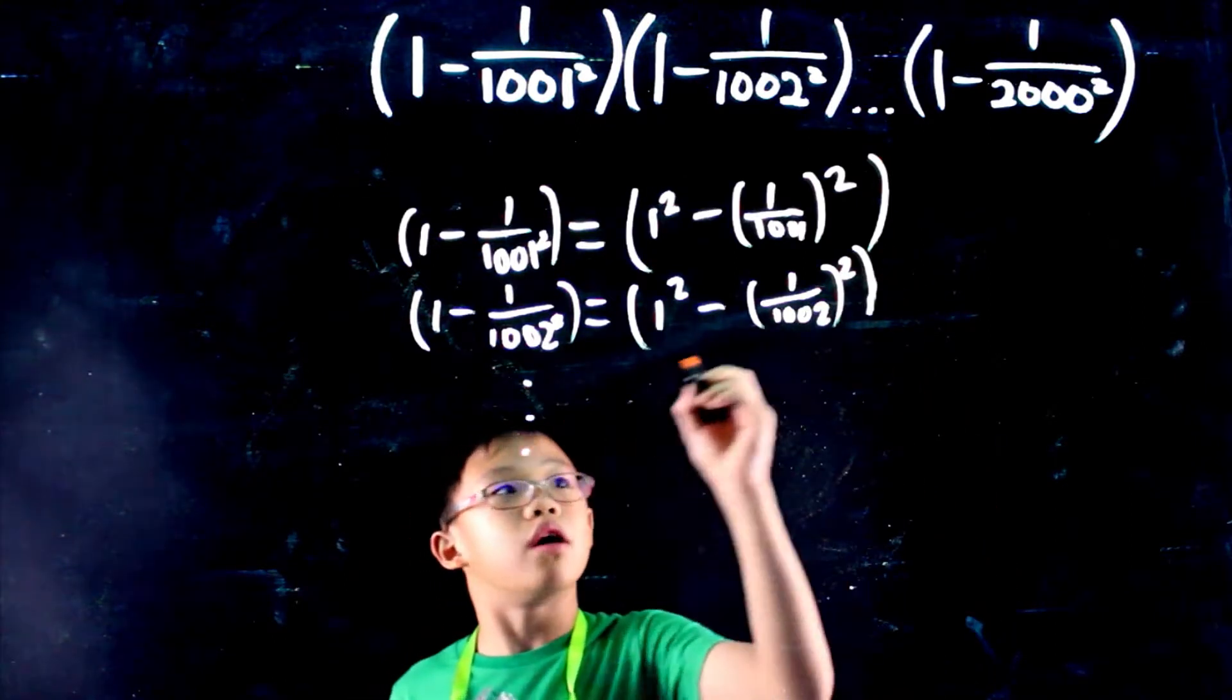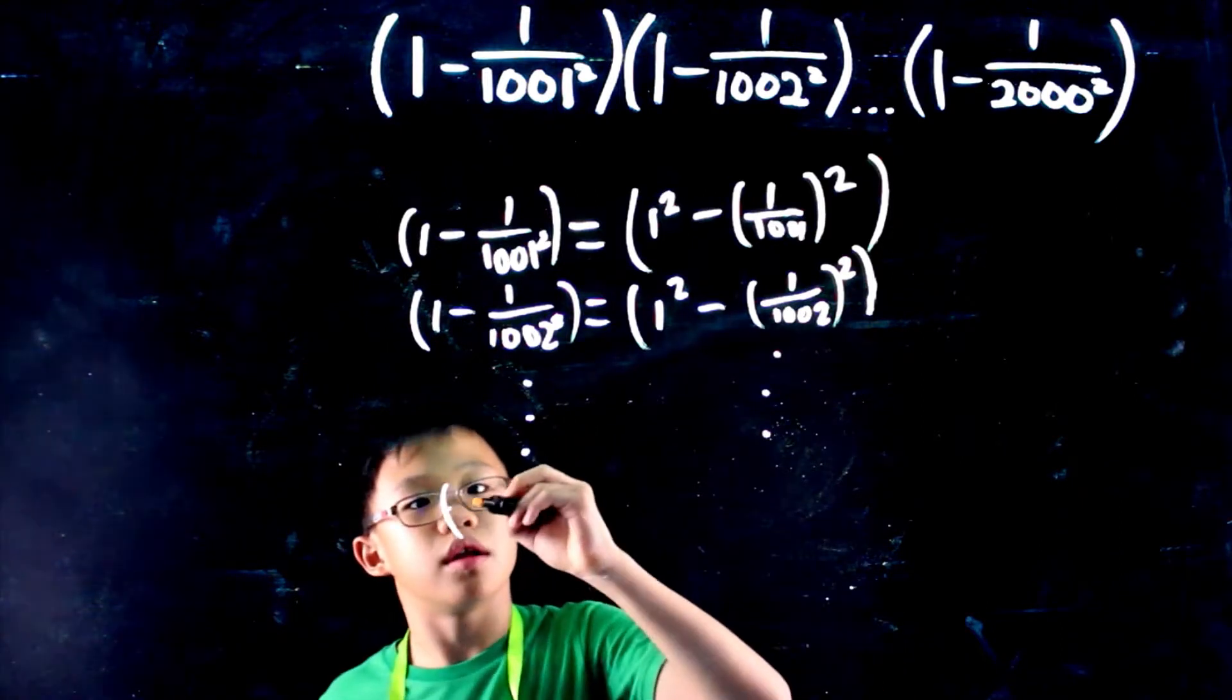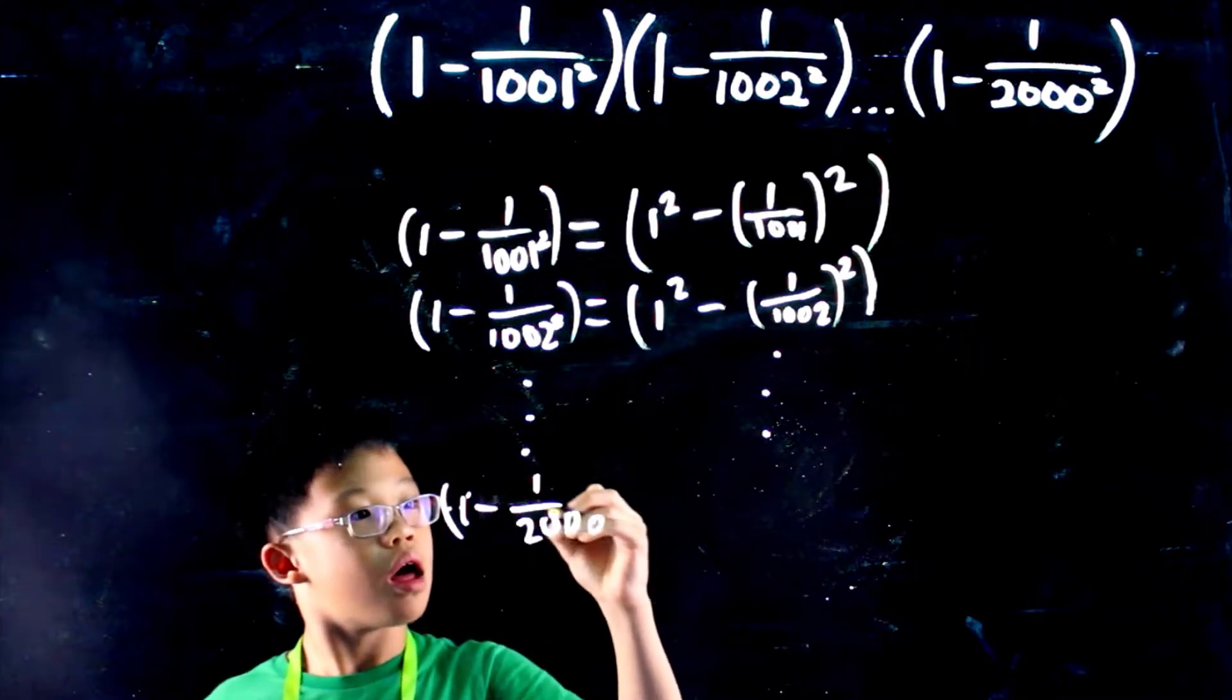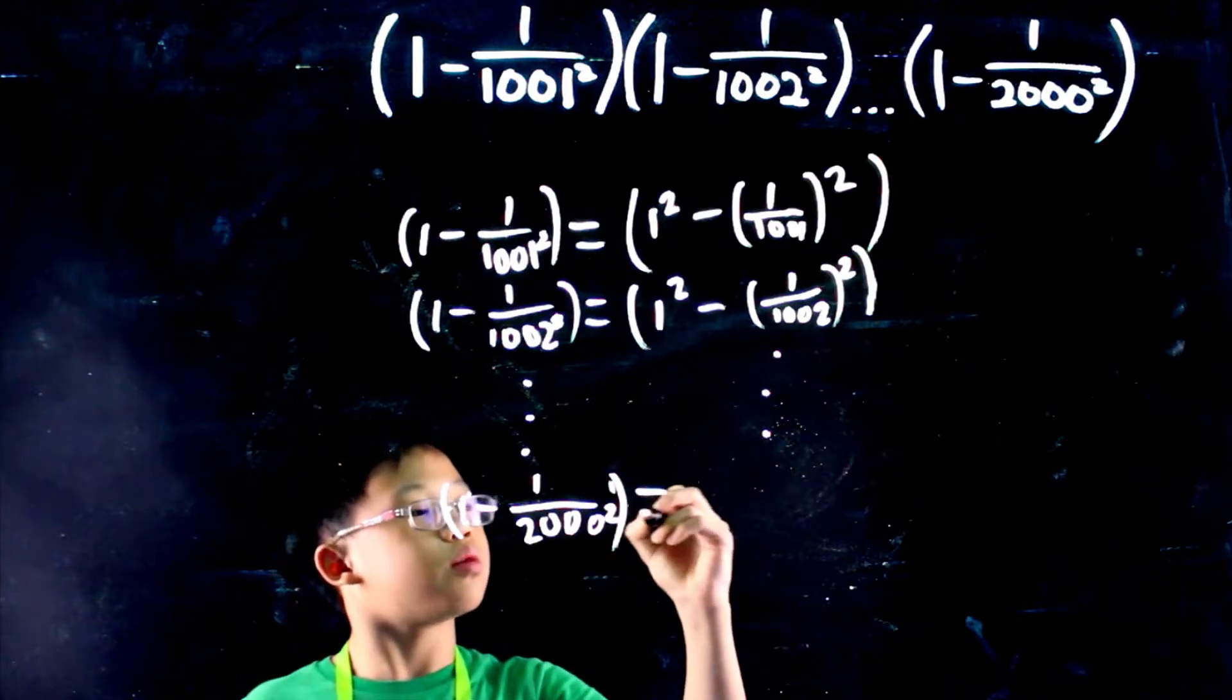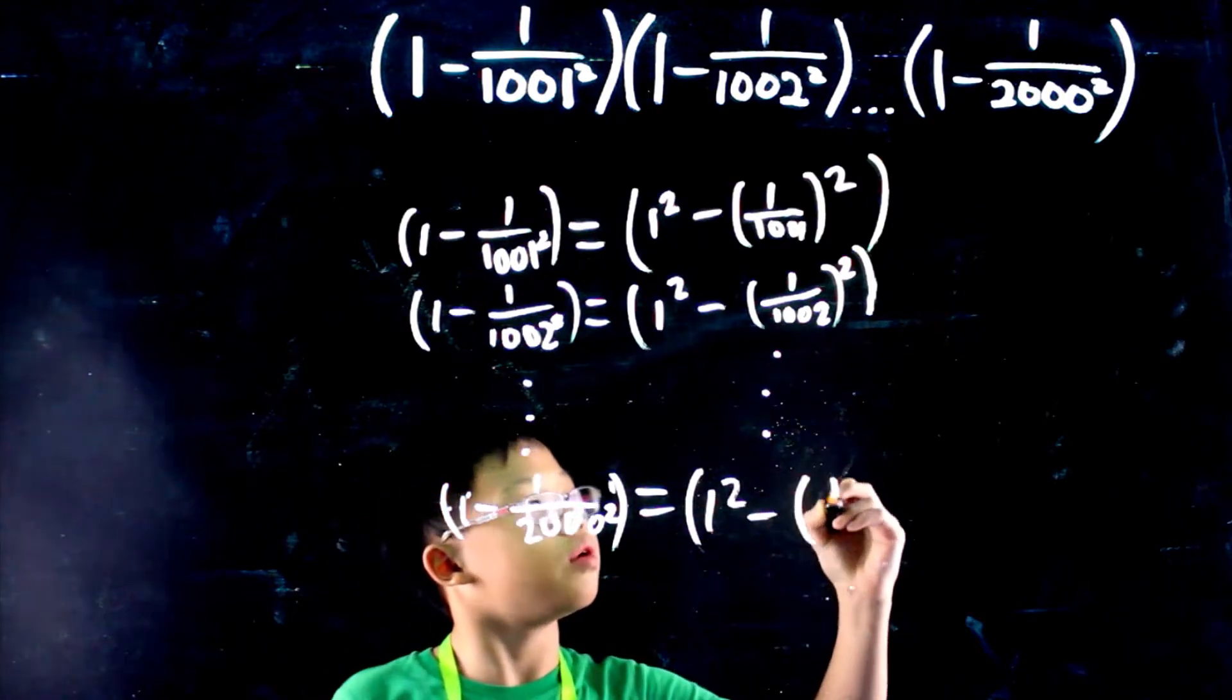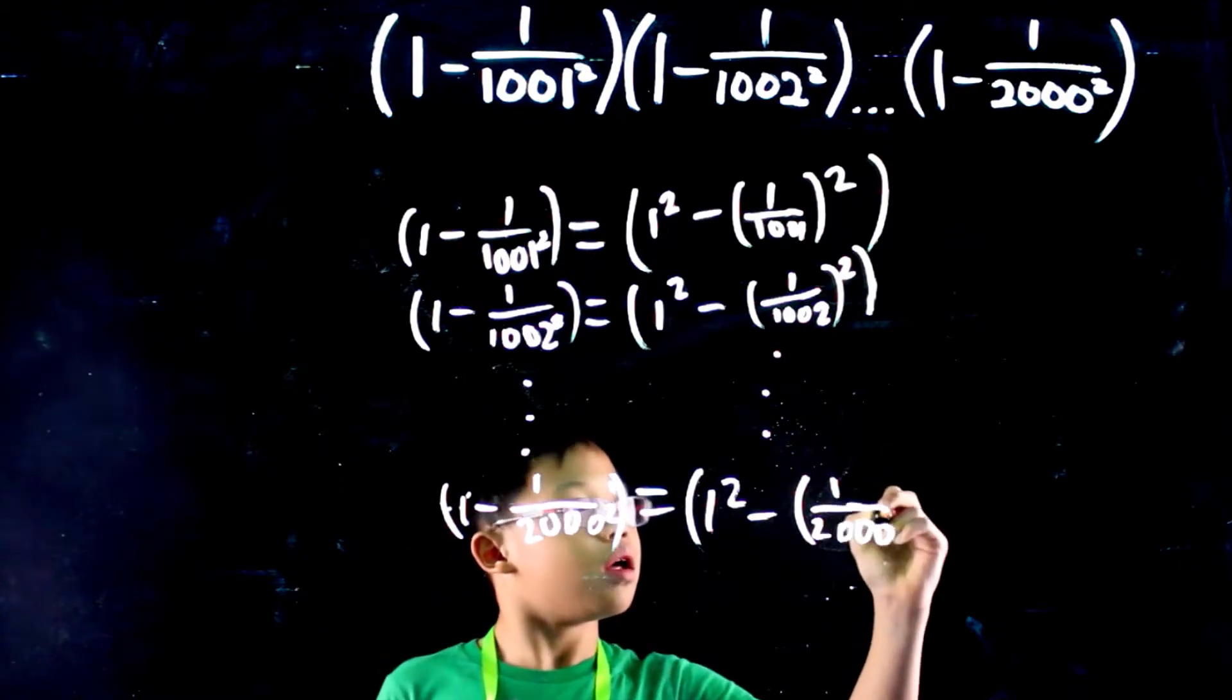And this pattern continues down until we reach 2000. So it is 1 minus 1 over 2000 squared equals 1 squared minus 1 over 2000 squared.